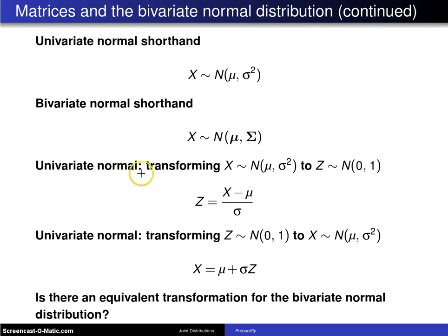Now a second thing we would do in the univariate case is we would transform an x which had a normal distribution with parameters mu and sigma squared to a z which was standard normal by standardizing: x minus mu divided by sigma.